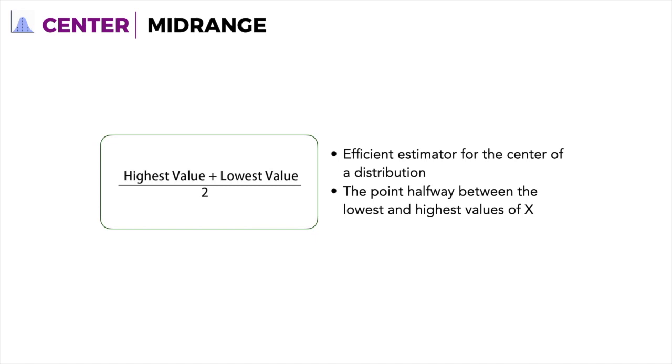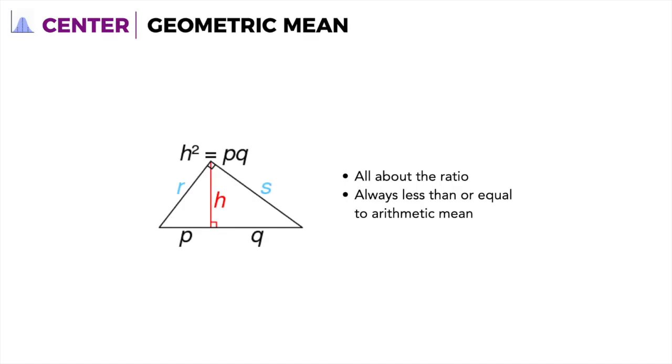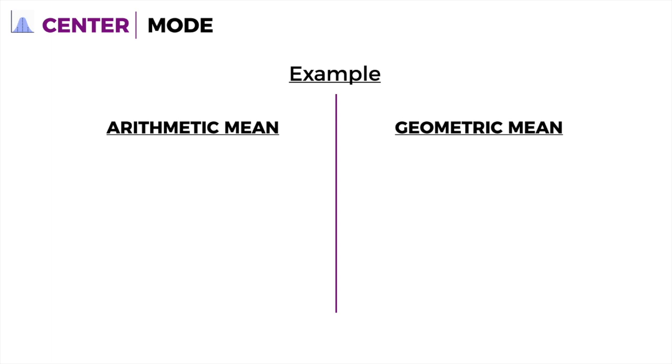Next would be geometric mean. We know arithmetic mean, but what is geometric mean? Geometric mean is all about ratio. It's always less than or equal to arithmetic mean. Going back to our example, in arithmetic mean, we got 20 as the mean. The difference between 8 and 20 and 20 and 32 is 12.